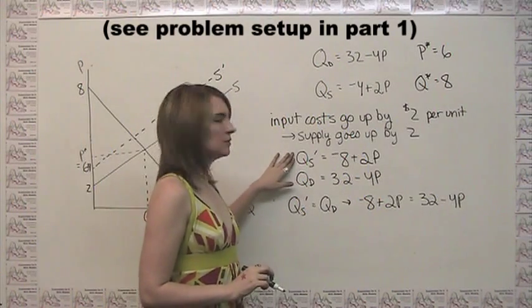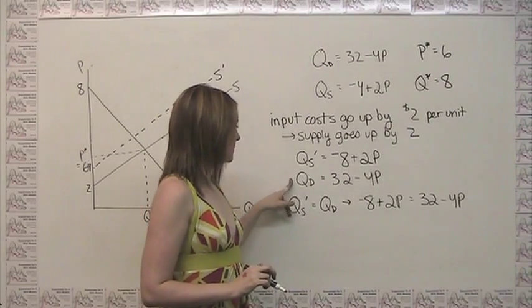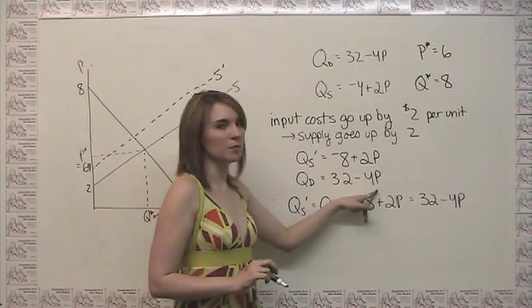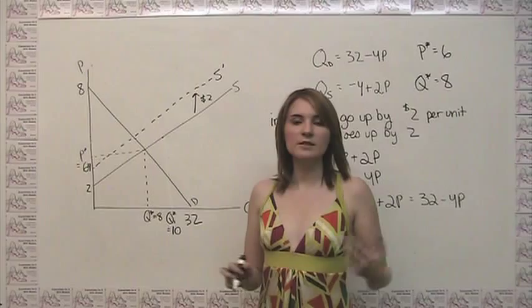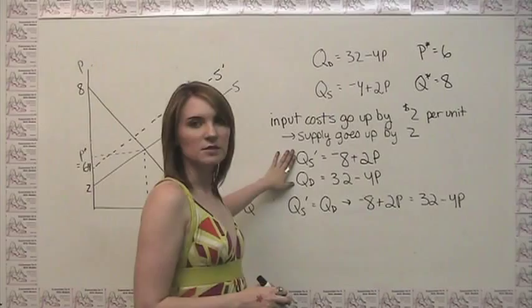So here we have the equation for our new supply curve, negative 8 plus 2p, and we have our equation for the original demand curve, 32 minus 4p, because you'll notice in our setup here in the scenario that we gave, our demand curve isn't moving around at all.